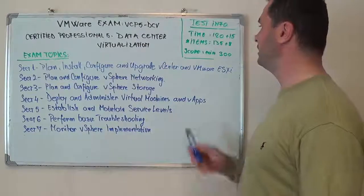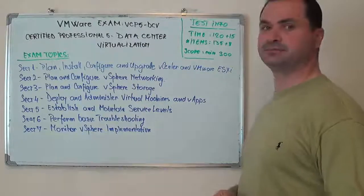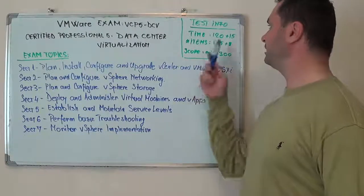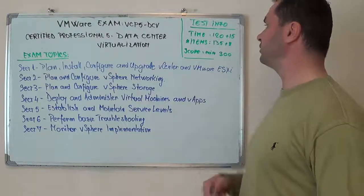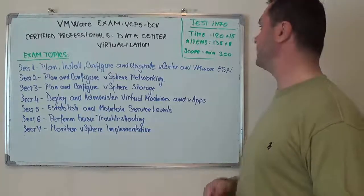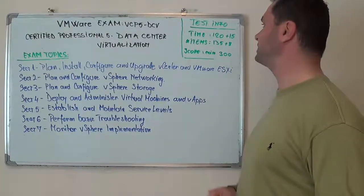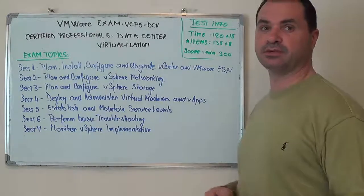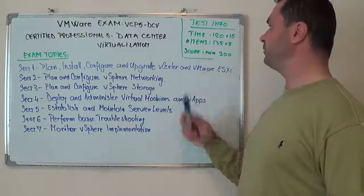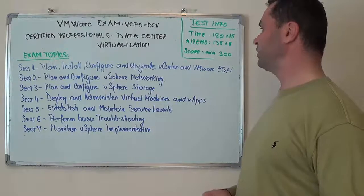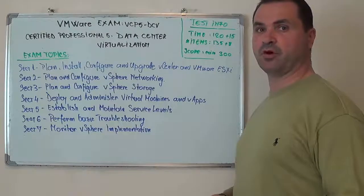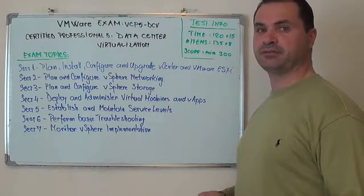Here are the basic test information. The time allowed is going to be 120 minutes for 130 questions, plus 15 minutes for 8 survey questions. The minimum required passing score is 300 on a scale from 100 to 500.